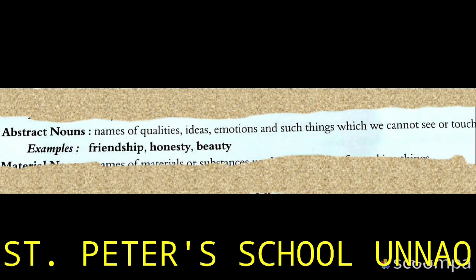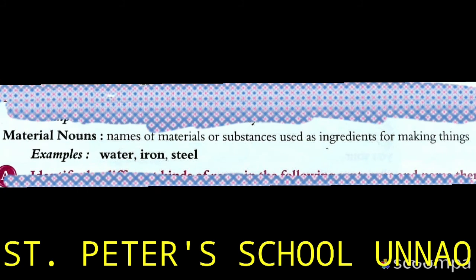Now the last kind of noun is material noun. Material noun refers to names of materials or substances used as ingredients for making things. Examples include gold, silver, iron, water, and steel.